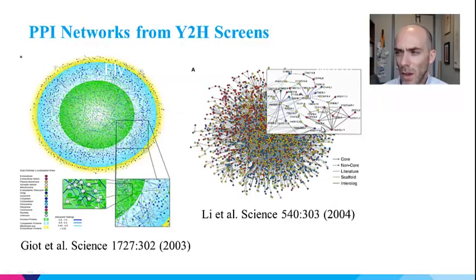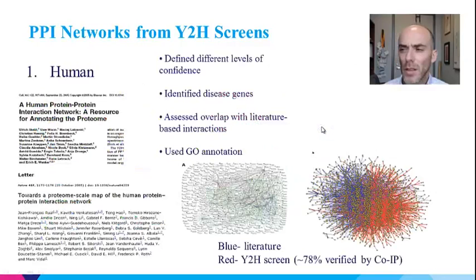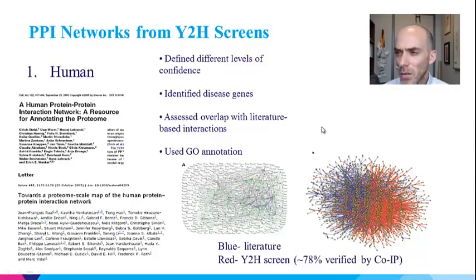Regardless of this concern, large-scale studies for mapping protein interactions in other model organisms quickly appeared and were published in top journals. This includes mapping of protein-protein interactions in human cells and comparing interactions identified from yeast-two-hybrid methods with previously identified interactions detected through low-throughput methods. What they found is that there was still very little overlap between the two approaches. We will discuss more about protein-protein interactions in later parts of the course.